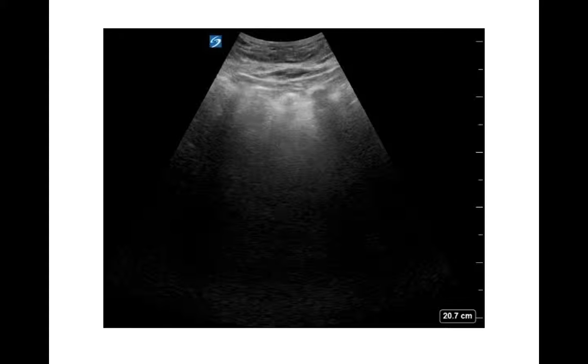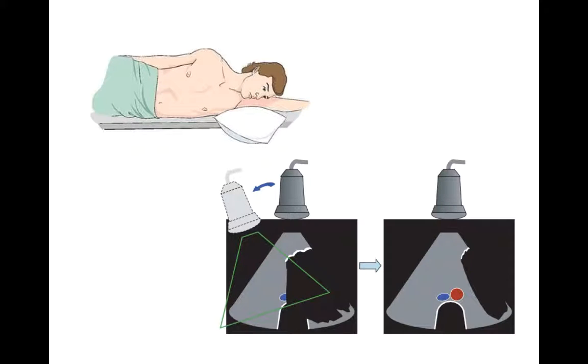Anyone who has performed at least a few AAA ultrasounds knows that the images I have shown aren't easy to obtain. Often you start off with this image of bowel gas overlying the structures you are looking for. Studies have shown that there is a high rate of technically limited studies from 8 to 23%. Body habitus and bowel gas are two of the biggest limits to the study.